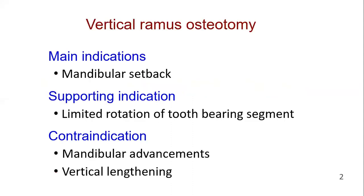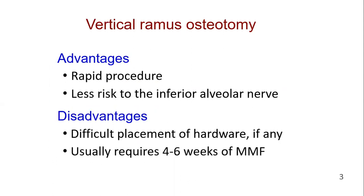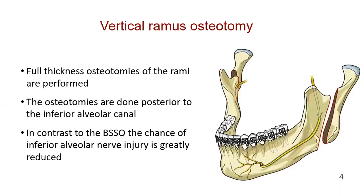Bismillah ar-Rahman ar-Rahim. Assalamu alaikum. In this video, we will explain vertical ramus osteotomy. It is mainly used for mandibular setback. It is a rapid procedure with less chances of inferior alveolar nerve injury.